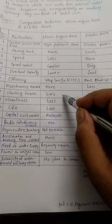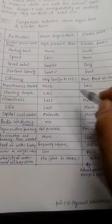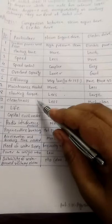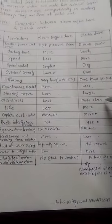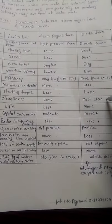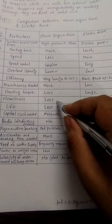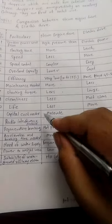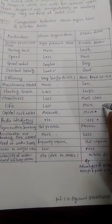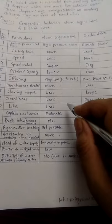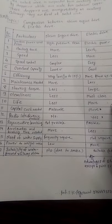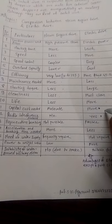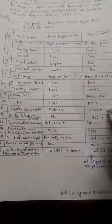Starting torque is less in steam engine drive but large in electric drive. Electric drives are cleaner in comparison with steam engine drive. Life of electric drive is more in comparison with steam engine drive. Capital cost is more in electric drive, which is a disadvantage of electric drive.